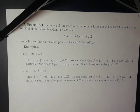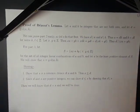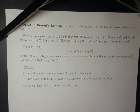We're going to show that that always happens. So let's start the proof. Let a and b be integers that are not both zero, and let d equal the GCD of a and b. We can prove part 2 easily, so let's do that first.